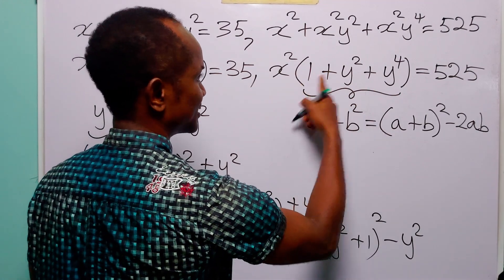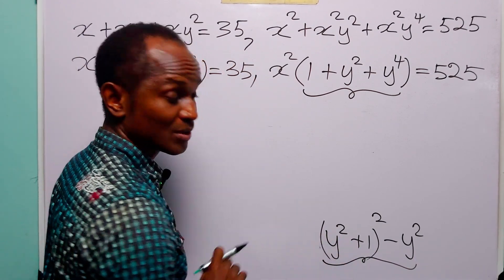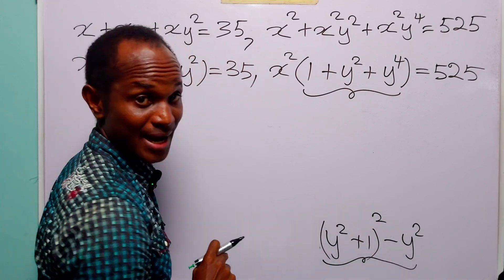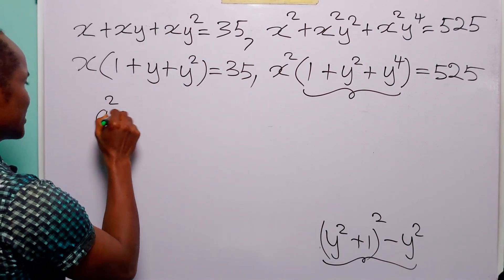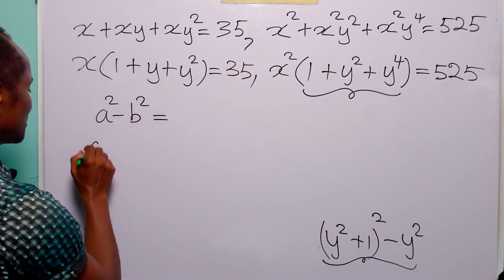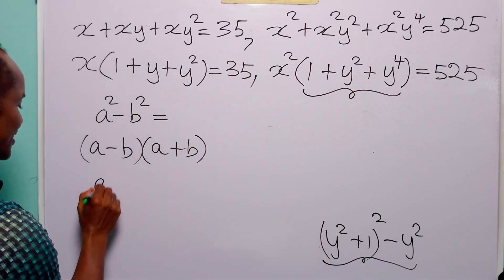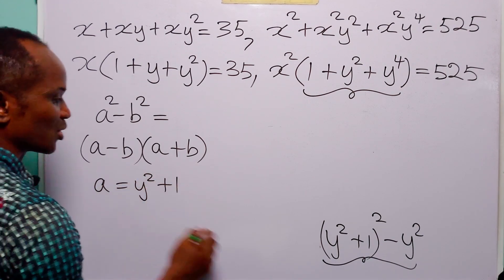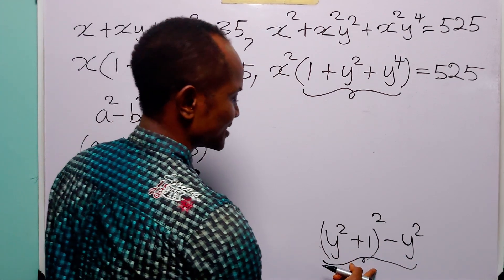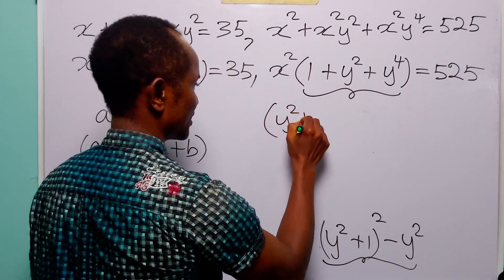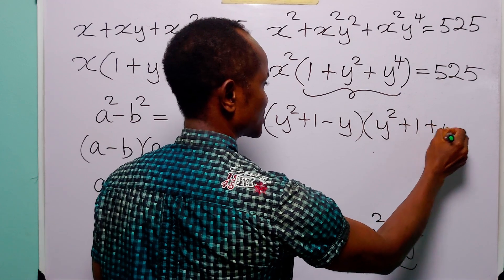So this becomes y squared plus 1, all squared, minus y squared. You can see that we have written this in a different form. Now, we have y squared plus 1 squared minus y squared — this is the difference of two squares. You know that a squared minus b squared equals a minus b multiplied by a plus b. Here, a is y squared plus 1, and b is y. So to factorize this, we have y squared plus 1 minus y, multiplied by y squared plus 1 plus y.